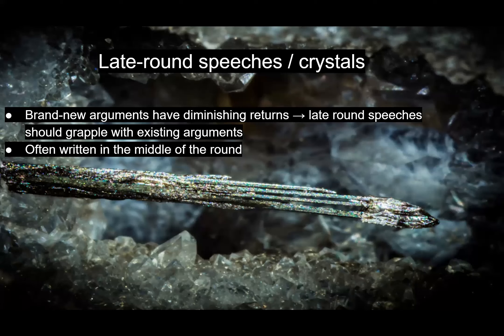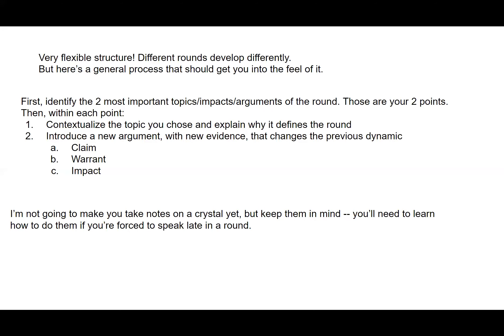Finally, let's look at the very late round. An important thing about Congress to understand is that introducing brand new arguments gets less effective as the round goes on. Once the framework of the debate has already been set, bringing up something completely unrelated doesn't really draw in the audience quite as much. Everyone's paying less and less attention as time goes on, and if you don't interact with something they were already paying attention to, they're a lot more likely to tune you out. To prevent that, late-round speeches are generally almost entirely refutation — trying to change the way previous speakers contextualized what the round is actually about and introduce new perspectives that shift how judges think about core pieces the debate has revolved around.